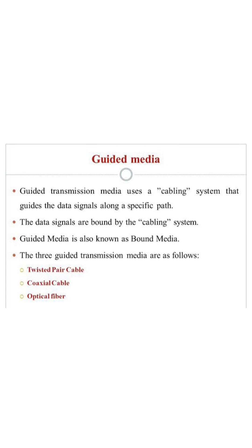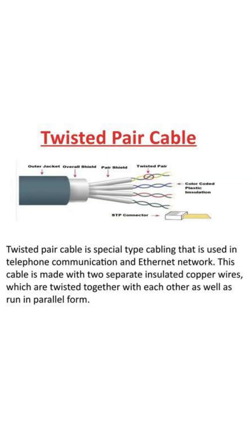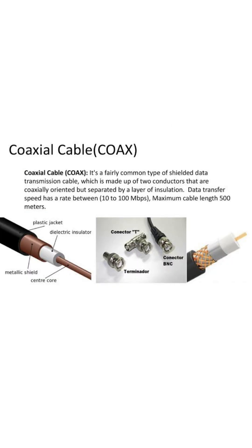Twisted pair cable, coaxial cable, and optical fibers are the different types of guided transmission media. Twisted pair cable is a special type of cabling used in telephone communication and Ethernet networks. This cable is made with two separate insulated copper wires which are twisted together and run in parallel. This figure shows how the twisted pair cable works.